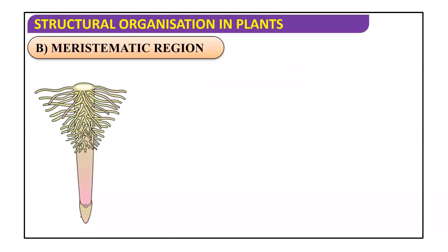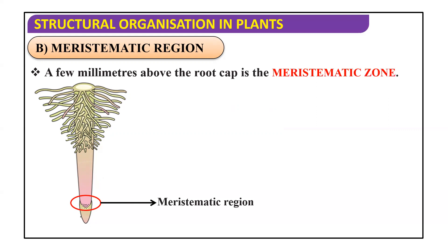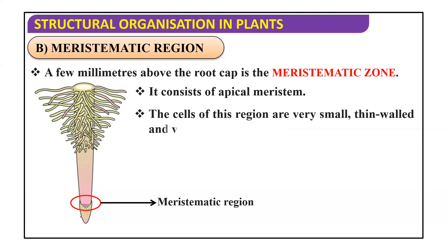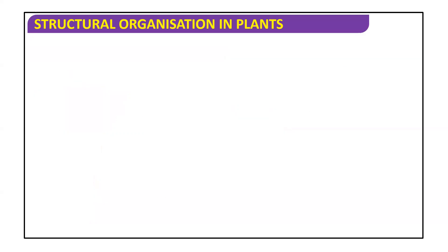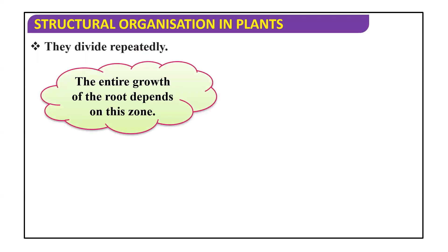The second region is the meristematic region. It is present just above the root cap. A few millimeters above the root cap is called the meristematic zone. It consists of apical meristem. The cells of this region are very small, thin-walled, and have dense protoplasm. They divide repeatedly. The entire growth of the root depends on this zone, so it is the growth zone for the root.